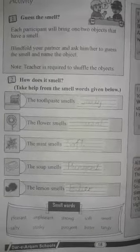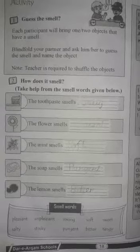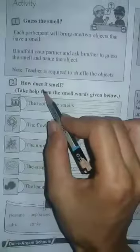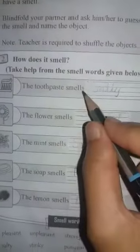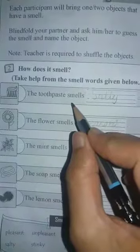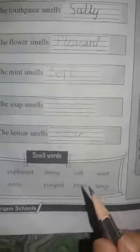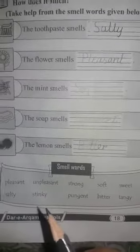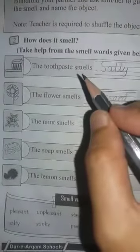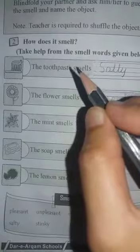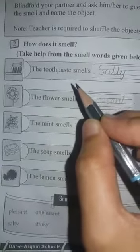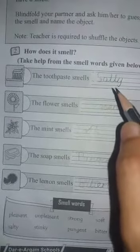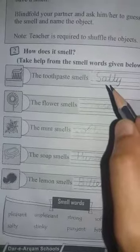Today we will discuss only the sense of smell. How does it smell? The toothpaste smell — it is toothpaste, the toothpaste smells. Students, we have some smell words here, we can take help from these words. As we know, we use toothpaste in the morning. We can say the toothpaste smell is salty. Then we will write here: salty.